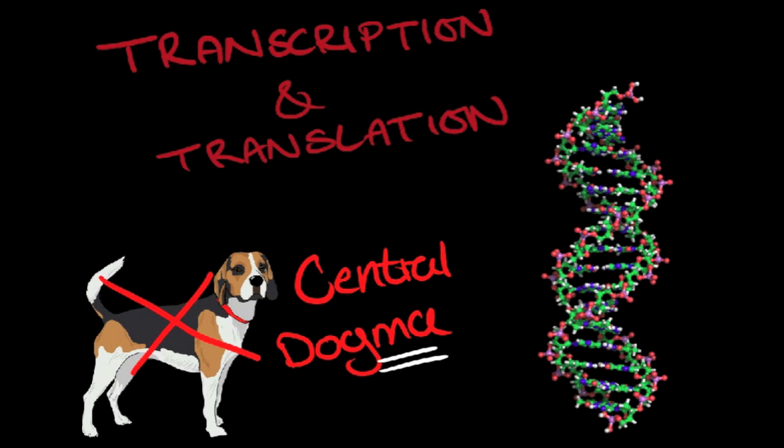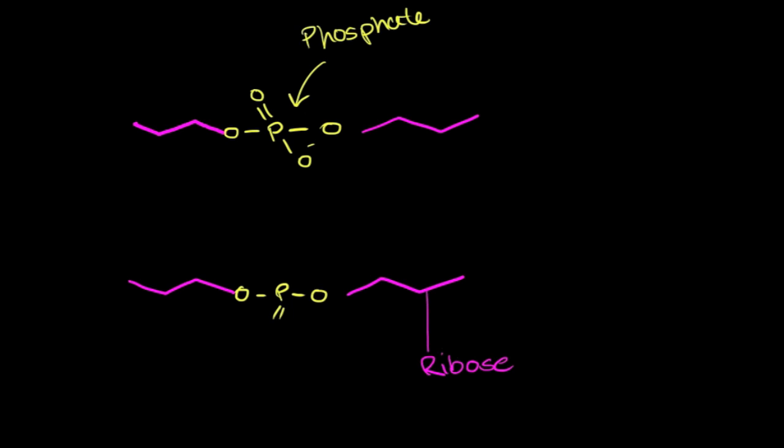All the information that encodes who you are, your genes, is made up of a large molecule called DNA, deoxyribonucleic acid. This is formed of three parts: a long backbone of sugar molecules called deoxyriboses, held together with phosphate molecules. This is wrapped in the familiar double helix shape. All the information is stored within this.